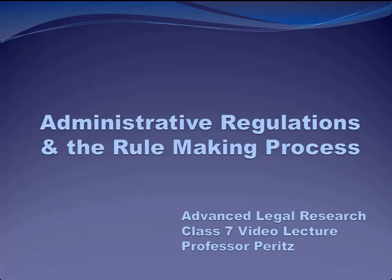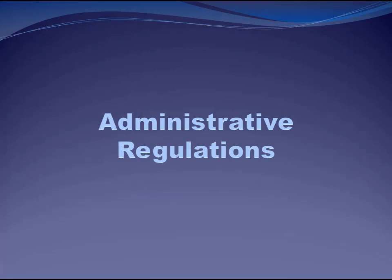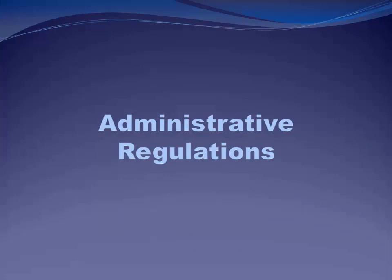So how does that happen? Basically Congress is empowered to do two different things: make laws, which you're all familiar with, and delegate law-making power to other entities. Congress delegates primarily to these executive branch agencies. We'll spend the rest of the class talking about administrative regulations and the administrative agencies that create this kind of law.